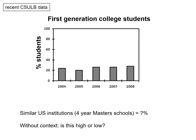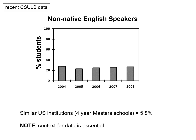Here's some data from Long Beach — recent data on the percentage of students across a variety of years that are first-generation college students, which seems to be around 20 percent. That's interesting data, but without context we don't know if that's high or low relative to other four-year master's schools. This is a perfectly good figure, although there's a bunch of wasted space, but if we had extra context it would be even better.